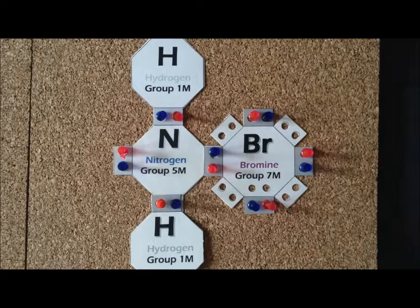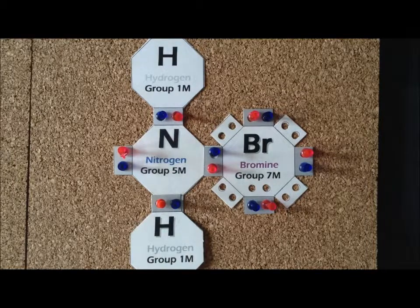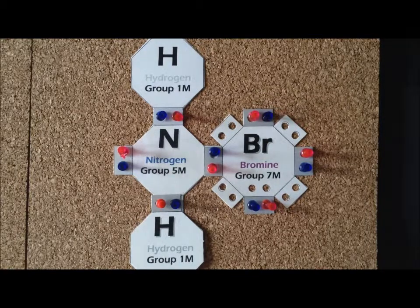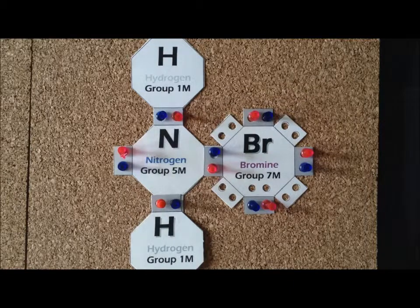If we replace one of the hydrogen atoms of ammonia with a bromine atom, we end up with the compound bromamine or monobromamine. It has the chemical formula NH₂Br. The bromine will contribute seven valence electrons, the nitrogen will contribute five valence electrons, and each of the hydrogen atoms will contribute one valence electron. Therefore, we end up with a 14-electron system.